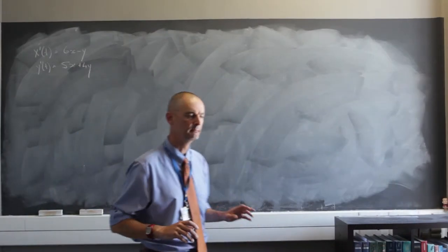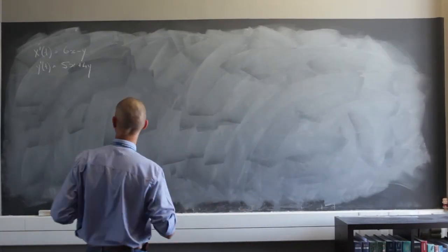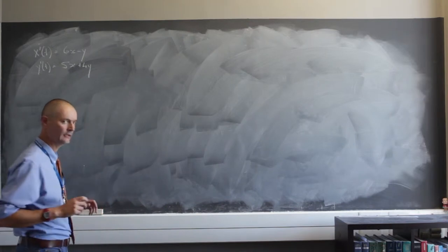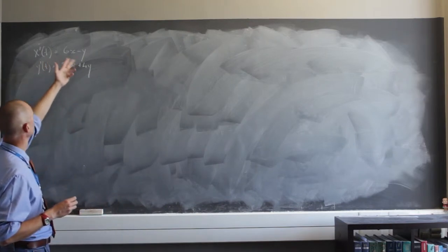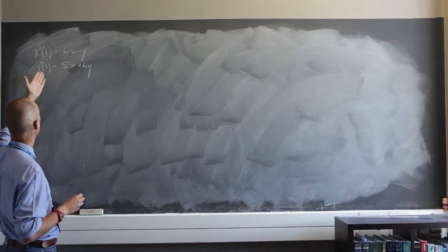And now we come to the very exciting bit of complex eigenvalues. So I have x prime of t equals 6x minus y, y prime of t equals 5x plus 4y.